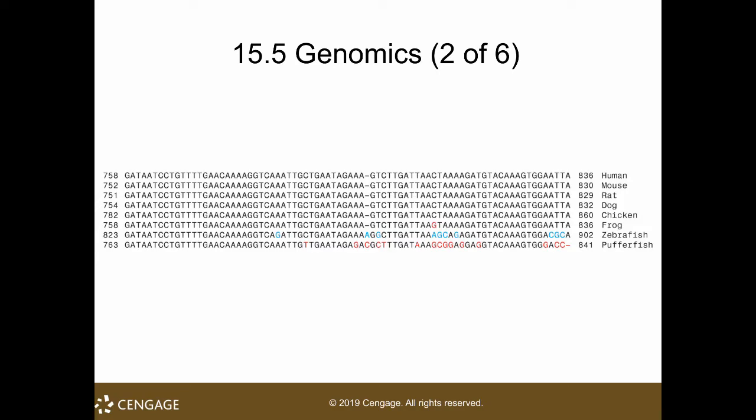That's why mice and rats are used in the laboratory for testing therapies, treatments, and studying diseases — because they resemble human genes very well. They are also much less expensive and easier to handle compared to chimpanzees. Although chimpanzees are the most similar to humans, it is easier to test drug candidates and therapeutic strategies on mice first because they are smaller, less expensive, and more manageable.